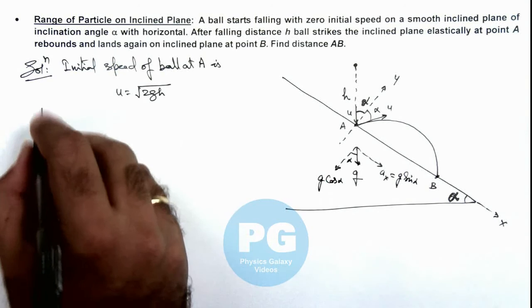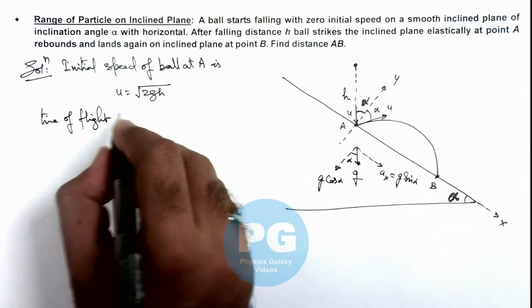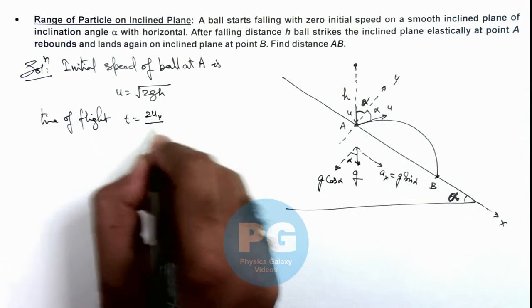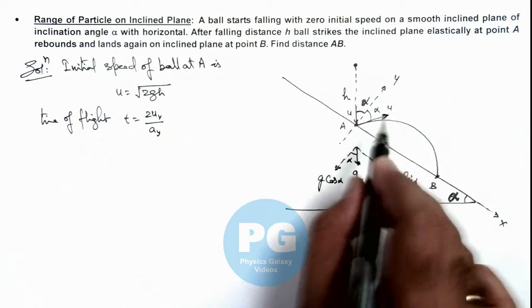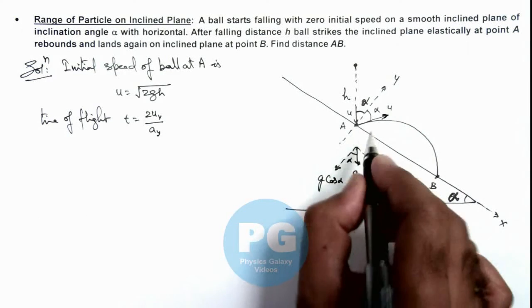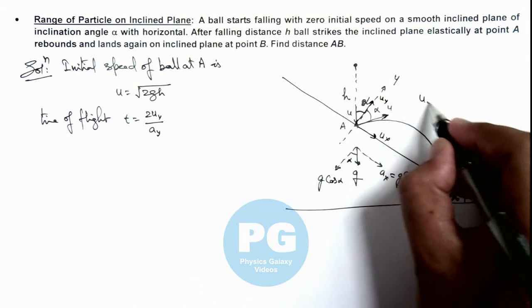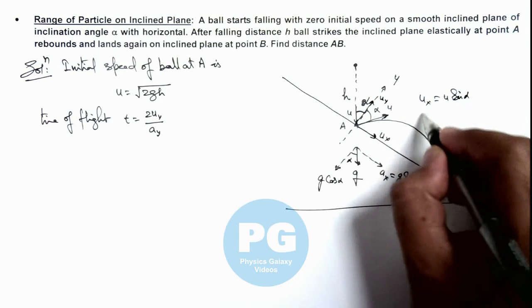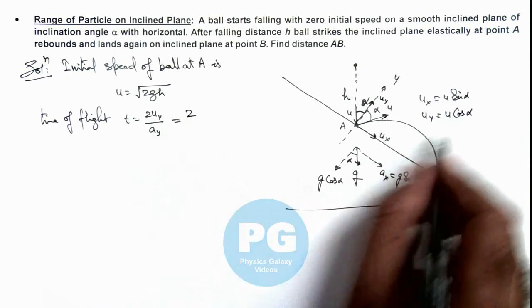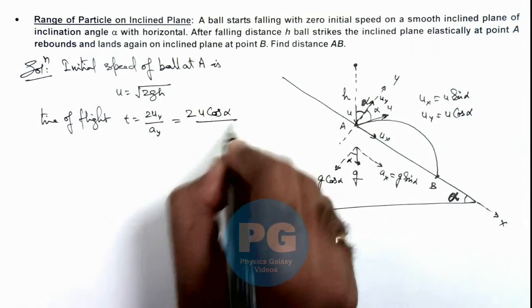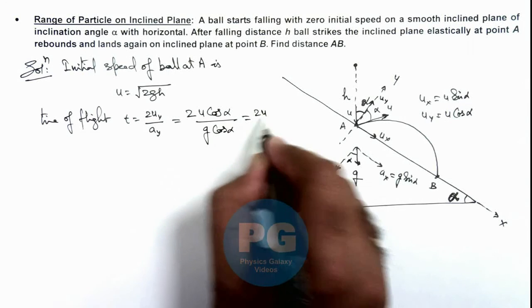In this situation we can directly write the time of flight of the projectile on the inclined plane as twice of u_y by a_y. For the particle which starts its projectile with speed u at angle alpha with the y-axis, the components u_x and u_y can be written as u_x equals u sine alpha and u_y equals u cos alpha. So we can write this as twice of u_y - that's u cos alpha - divided by acceleration in y direction, g cos alpha. This gives us a time of flight of 2u by g.